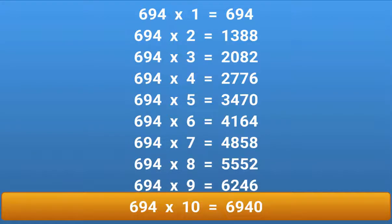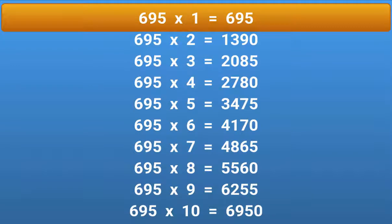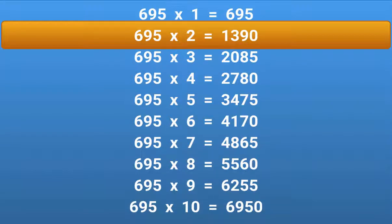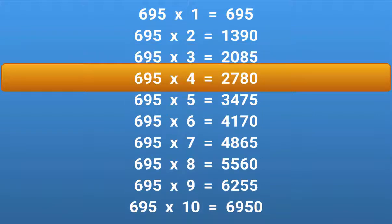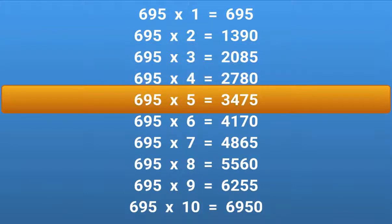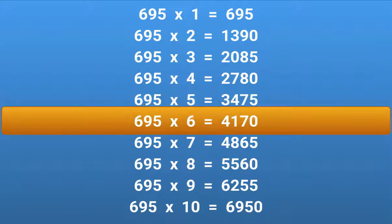694 × 10 = 6940. 695 × 1 = 695. 695 × 2 = 1390. 695 × 3 = 2085. 695 × 4 = 2780. 695 × 5 = 3475. 695 × 6 = 4170.